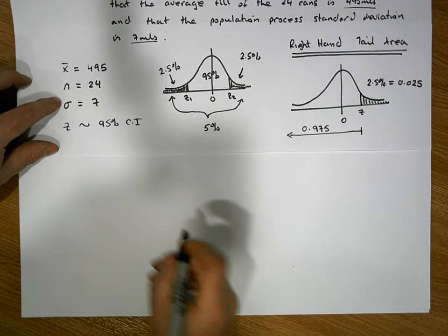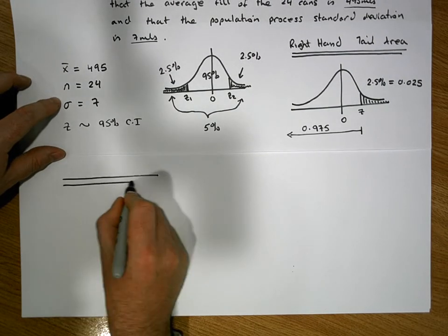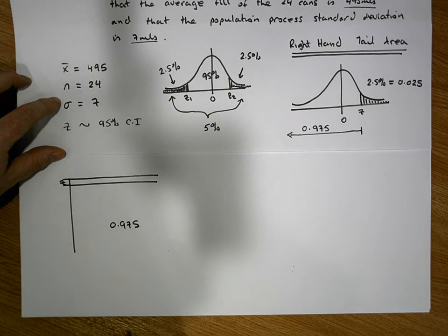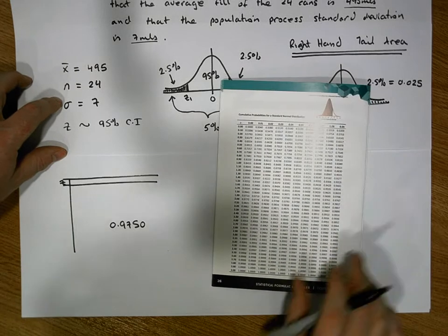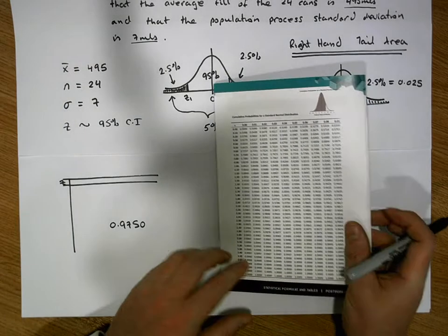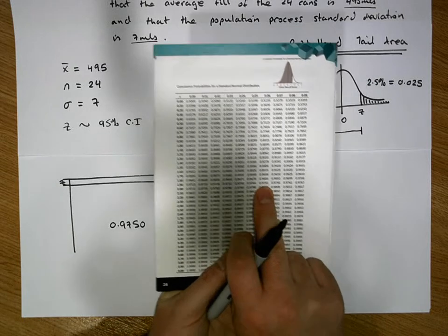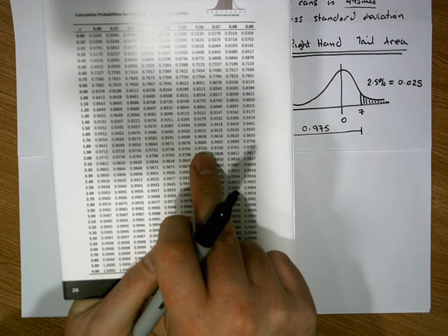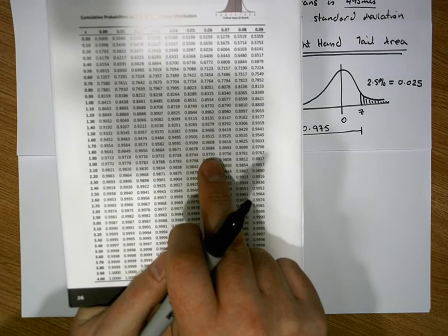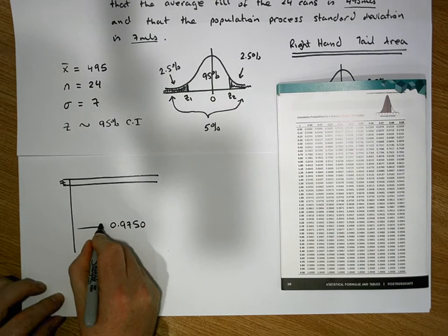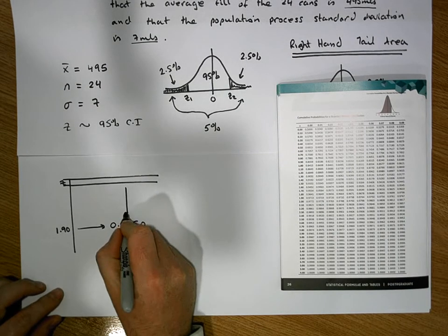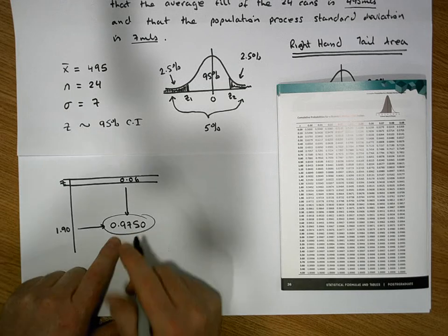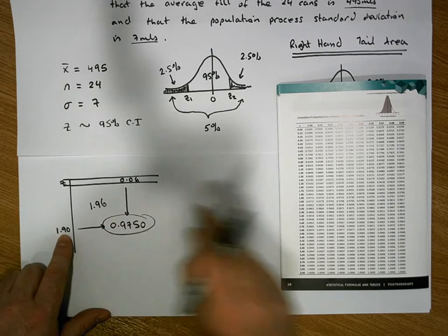Looking at the tables, z scores are listed across the first row and down the first column. We're looking for an area of 0.9750. That particular area resides on the row 1.90 and under the column 0.06. So the z score associated with 0.975 of the area to the left-hand side is 1.96 — that's 1.90 plus 0.06.